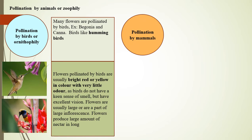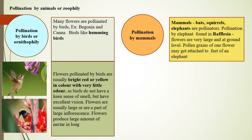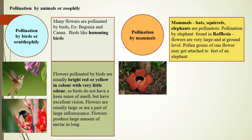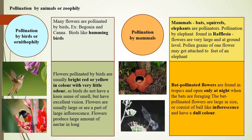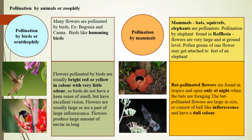Pollination by mammals: Many mammals such as bats, squirrels, and elephants are useful pollinators of some plants. Pollination by elephant is found in Rafflesia, whose flowers are very large and at ground level — pollen grains from one flower may get attached to the feet of an elephant and transferred to the stigma of another flower when it steps on or touches it. Bat-pollinated flowers are found primarily in the tropics and open only at night when bats are foraging. They are large in size or consist of ball-like inflorescences and have a dull color.